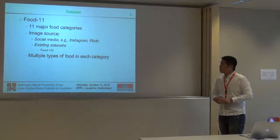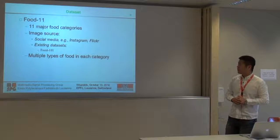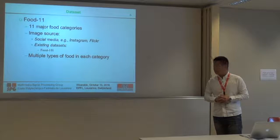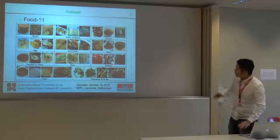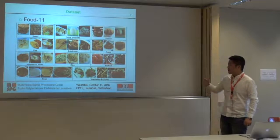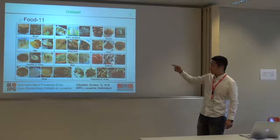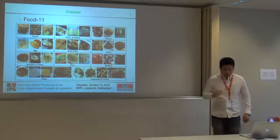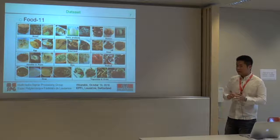We also collected another dataset called Food 11, which contains 11 major food categories. We got the food images from social media like Instagram and Flickr, and also from existing food image datasets. The 11 categories are: bread, dairy products, dessert, egg, fried food, meat, noodles and pasta, rice, seafood, soup, and vegetables and fruits. When collecting images for this dataset, we also tried to include very different types of food in each category.